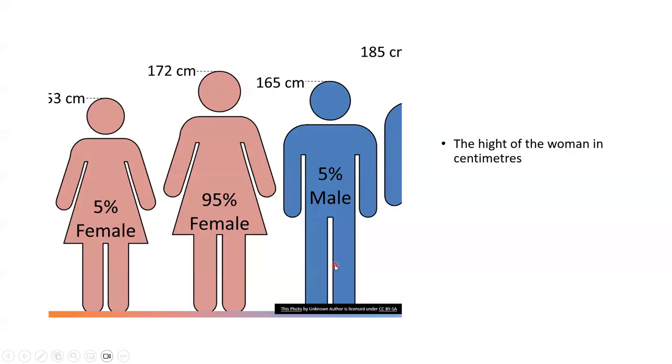Let us continue. The number of teeth in your mouth — how many teeth have you got? I have got 32. It's 32. The height of the woman in centimeters: this woman is 172 centimeters.